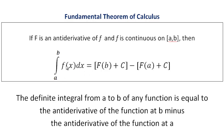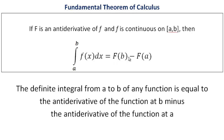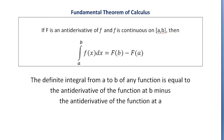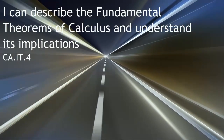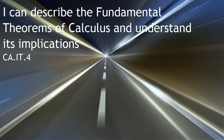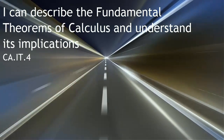If we integrate at b, we get capital F of b plus a constant c, and at a we get capital F of a plus that same constant c. Those two constants are identical, so they cancel each other out, leaving us with F of b minus F of a. We've now proven both fundamental theorems of calculus, which link differentiation to integration and allow us to compute the definite integral.